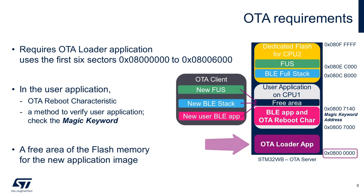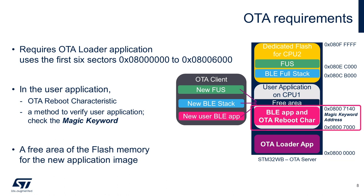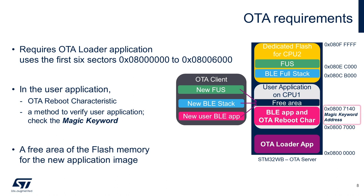First, the OTA loader application must be programmed in the first six sectors of the flash memory. Second, in the user application, the OTA reboot characteristic is required. Additionally, a method to verify a valid user application can be used. From these examples, the user application stores a magic keyword inside the magic keyword address, which is 0x08007140.